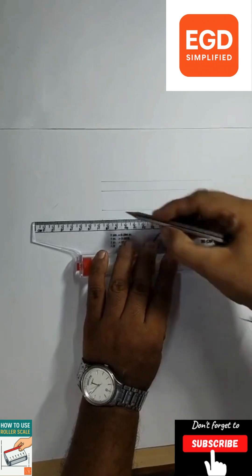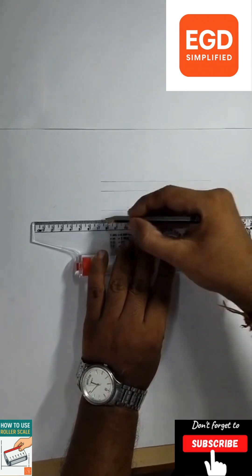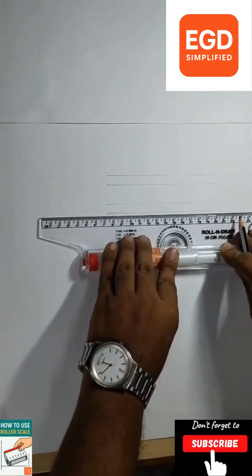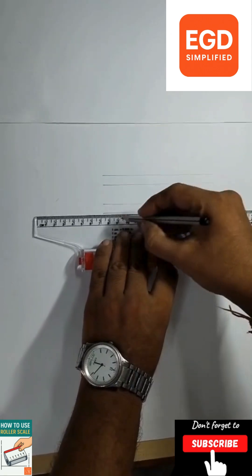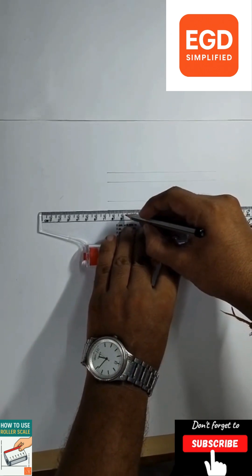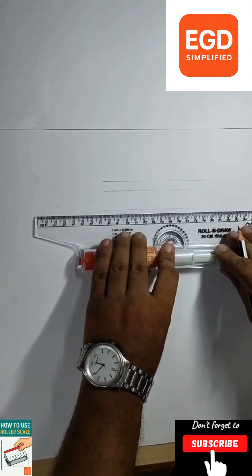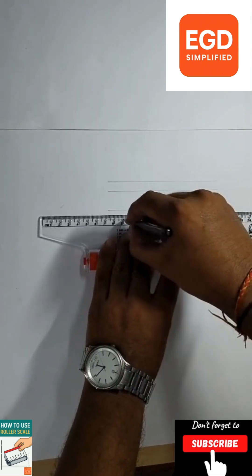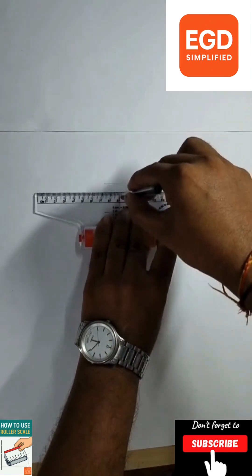And draw the lines. To draw the perpendicular line, let's say if at every one centimeter or 10 mm distance we need perpendicular lines from this last line, so put your pencil here and just roll the roller scale.